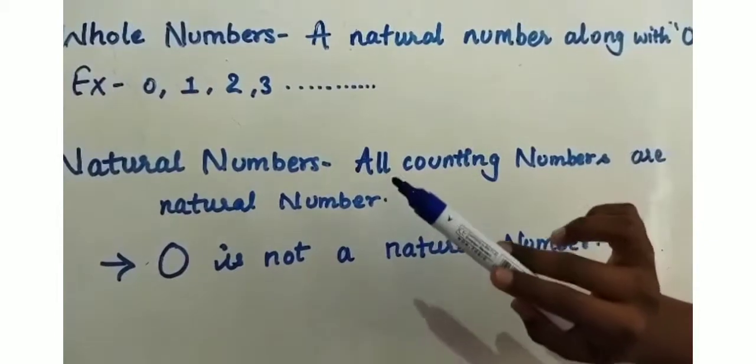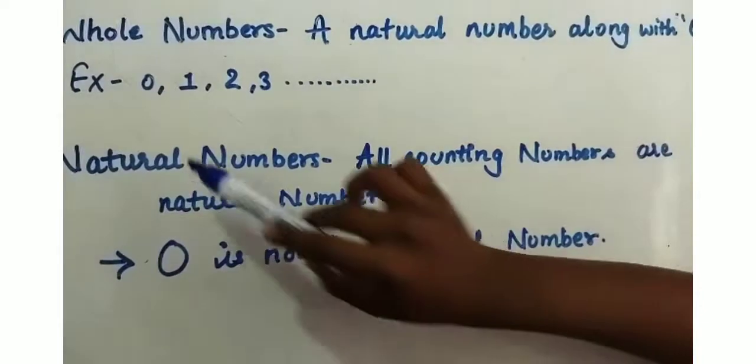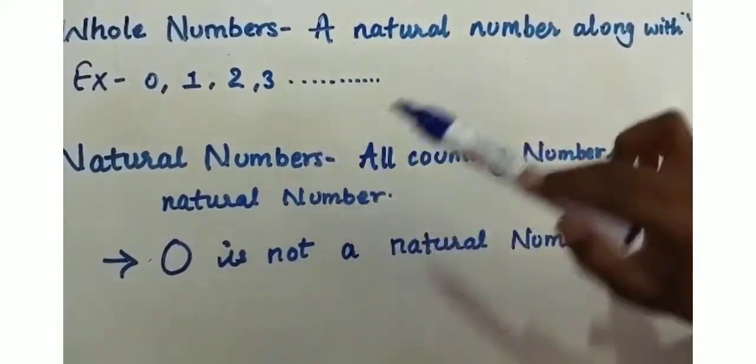Do you know what is whole number? A natural number along with 0 is known as whole number. Example: 0, 1, 2, 3 and so on.